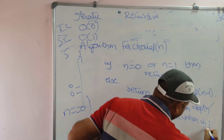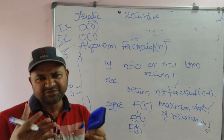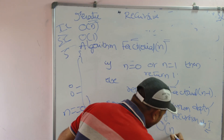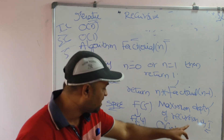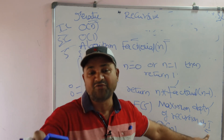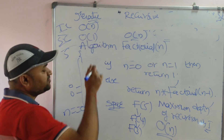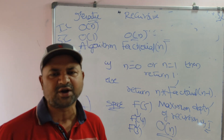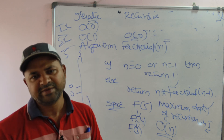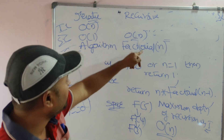The space complexity of the recursive factorial algorithm is O(n), because the depth of recursion is n — if n = 5 we call 5 functions. In contrast, the iterative algorithm has space complexity O(1). For the recursive algorithm, n function calls are needed (and n - 1 also leads to considering n since the maximum exponent is 1), so the space complexity is O(n).